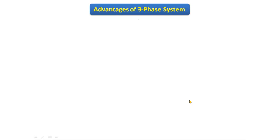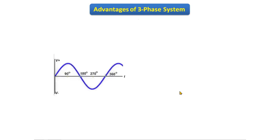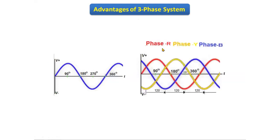If you see the single-phase waveform, it looks like this — it starts from zero, the positive half cycle ends at 180 degrees, the negative half cycle ends at 360 degrees, and so on. This is the waveform of the single-phase system. If we take the three-phase system, there are three phases.